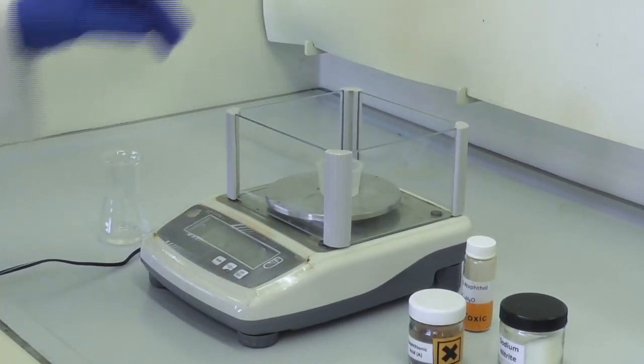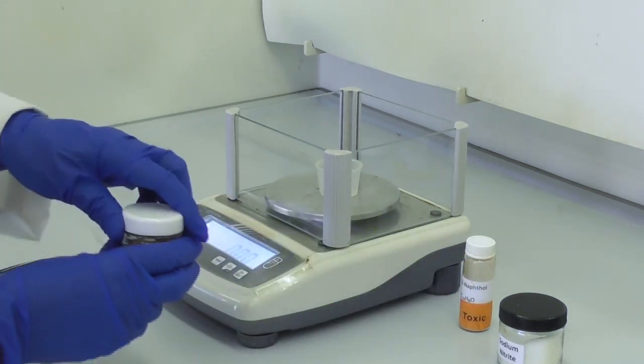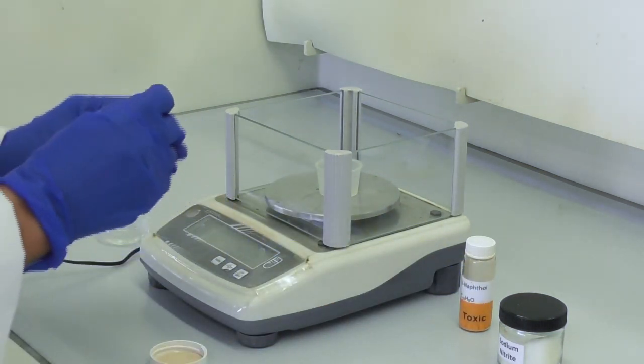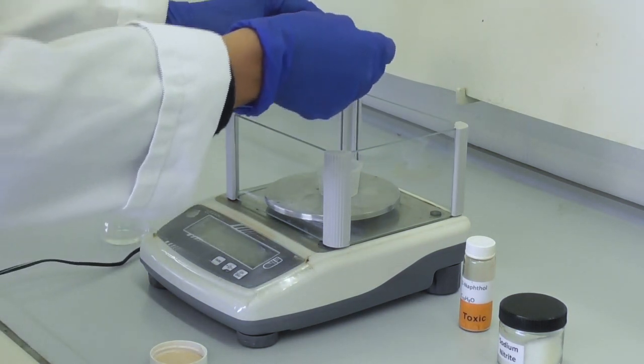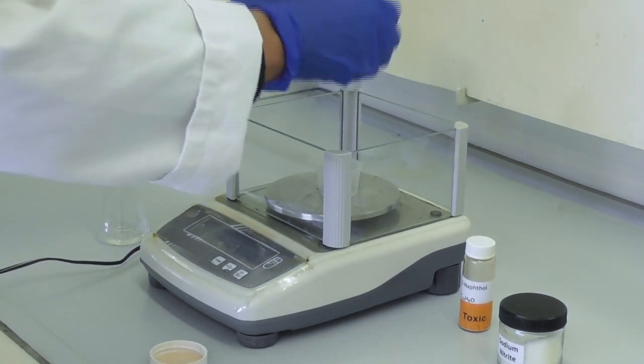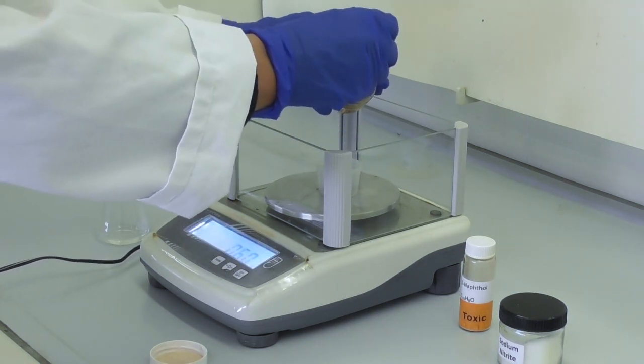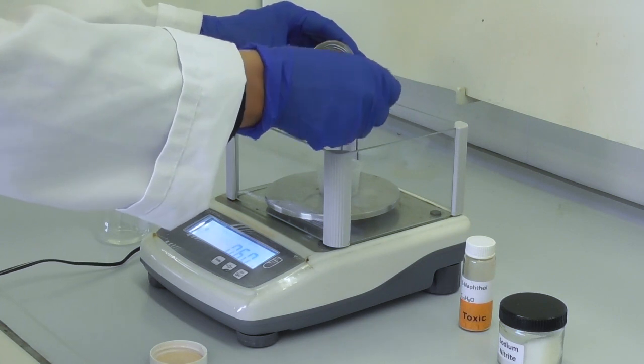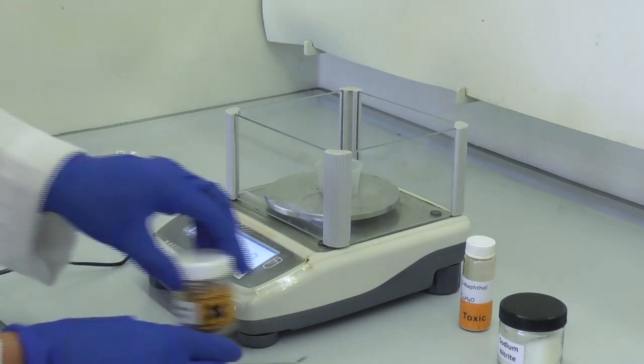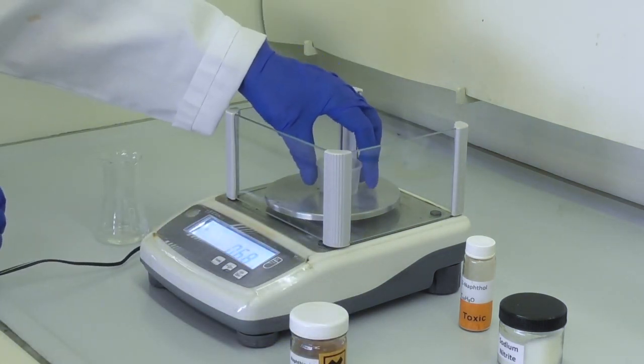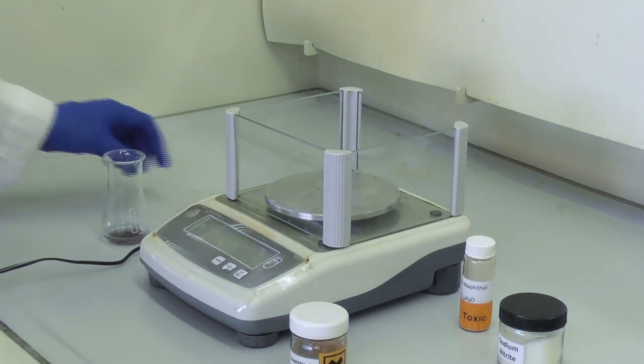In the fume hood I weigh out 0.65 g of naphtheonic acid into a weighing bottle, and then transfer this straight away into my phosphoric acid solution.